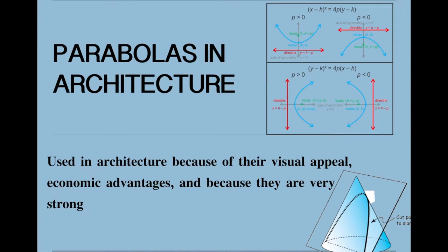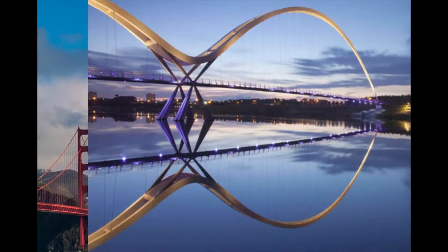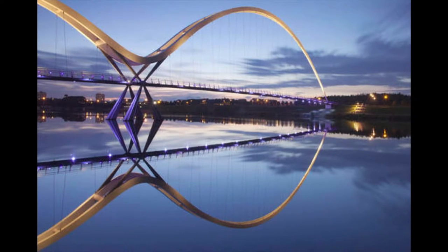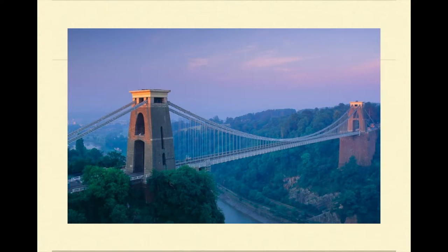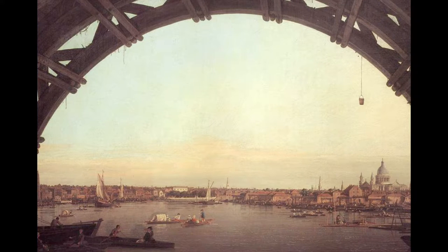Parabolas are an example of a conic that is often used in architecture. They're used because of their visual appeal, their economic advantages, and because they're very strong. Many bridges have suspensions in the shape of parabolas, like the Golden Gate Bridge, the Brooklyn Bridge, and many other bridges. Architects use this shape not only for its visual appeal, but the tension in the cables takes most of the weight that the bridge is carrying, and they're easy to construct, so they make sense economically.